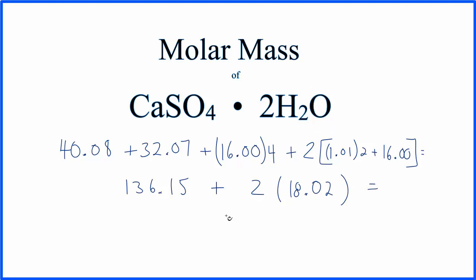And that gives us a final molar mass of 172.19 grams per mole. I didn't write grams per mole after each one of these—that gets to be a little tedious—but this is the molar mass for CaSO4·2H2O.